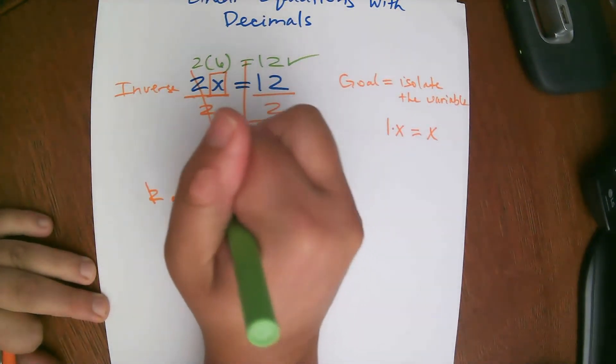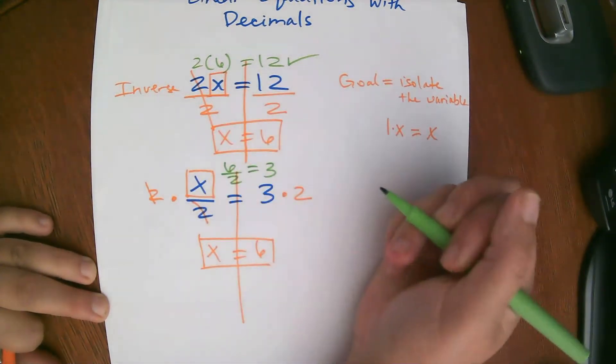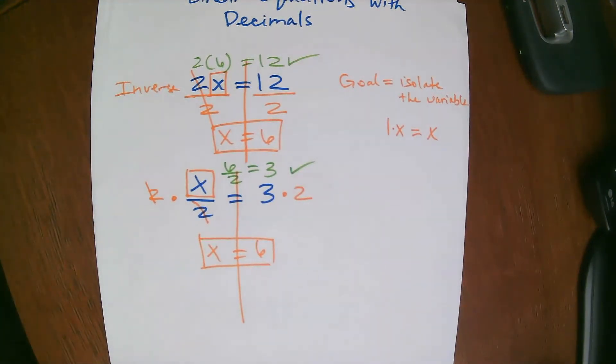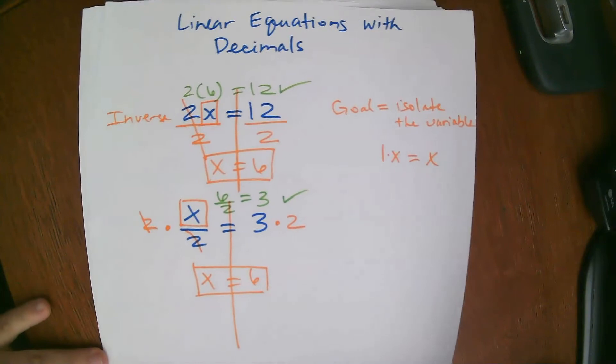I can check this as well, right? So instead of x, this would be 6 divided by 2 equals 3, which it does. So we got it correct. So now let's look at it with decimals. You'll see how very, very, very similar this is.